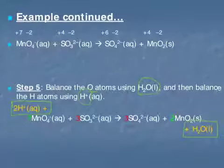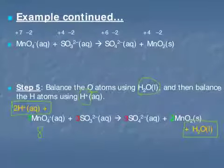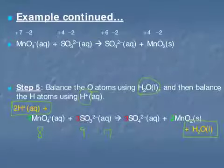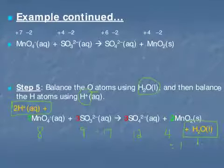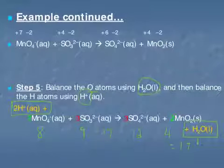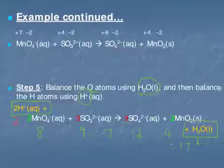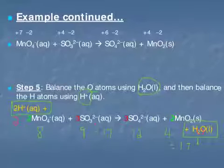We can quickly double-check our results. On the reactant side we have 8 atoms of oxygen, plus 9 more — totaling 17. On the product side, 3×4=12 plus 2×2=4 plus 1 from water also gives 17. For hydrogens: we have 2 hydrogens on the reactant side, and 2 hydrogens in water on the product side — so hydrogens are balanced as well.